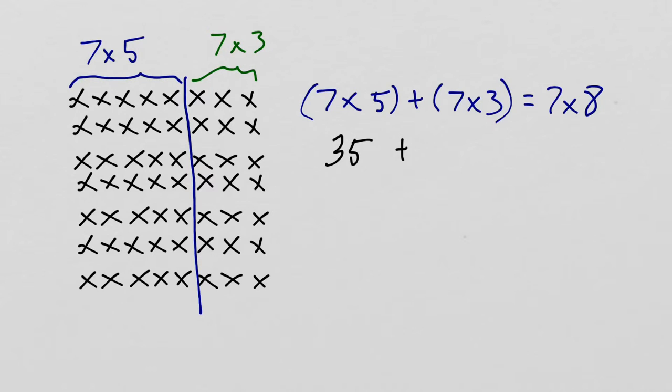That was 7 5s plus 7 times 3. I can count by 3s 7 times or count by 7s 3 times. I'm going to count by 7s. 7, 14, 21. So this becomes 35 plus 21. I can do a little side math. 35 plus 21, I start with the 1s. 5 plus 1 is 6. 3 tens plus 2 tens is 5 tens. So it's 56.